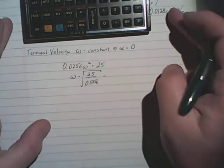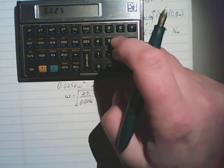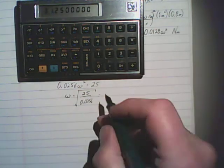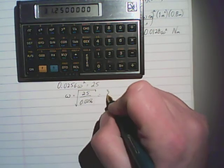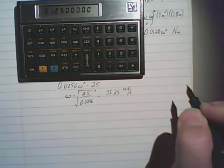So, plugging that into the calculator, our terminal angular velocity is 31.25 radians per second.